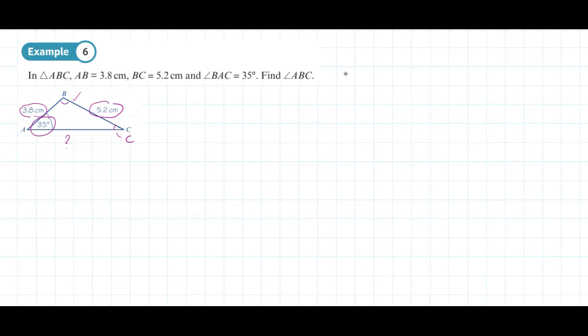So let's work out angle C. We go sine of the angle at C divided by the side that's opposite, 3.8, equals sine of 35 degrees divided by 5.2.